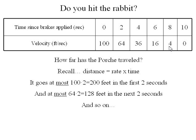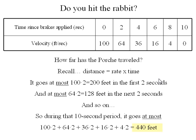We're going to do that for each two-second time interval. During the ten-second period, the furthest we possibly could have traveled is 440 feet. What we've done is used the fastest speed on each time interval to estimate how far we possibly could have gone in each two-second interval. So we have an upper bound of how far we've gone once we've applied the brakes.